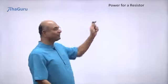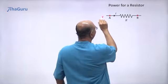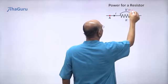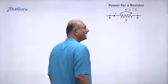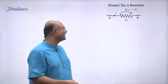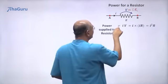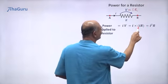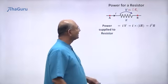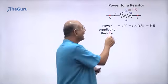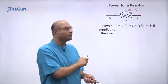Let us now look at the formula for power for a resistor. Here I have a resistor with a current I entering. The potential drop V will be I times R. We know that power supplied to a resistor is I times V. But since V equals IR, if I substitute for V, I get I times IR, which is I squared R. I squared R is a formula that is only valid for a resistor, while IV is valid for any box.